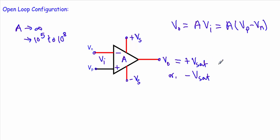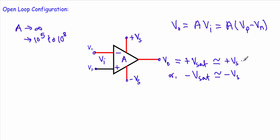When the operational amplifier operates in the saturation region, the positive saturation voltage is controlled by the positive supply voltage, and the negative saturation voltage is controlled by the negative supply voltage. So the positive saturation voltage is nearly equal to +V_S and the negative saturation voltage is nearly equal to −V_S. In practice, the saturation voltage is slightly lower than the supply voltage — we assume it is about one volt less.